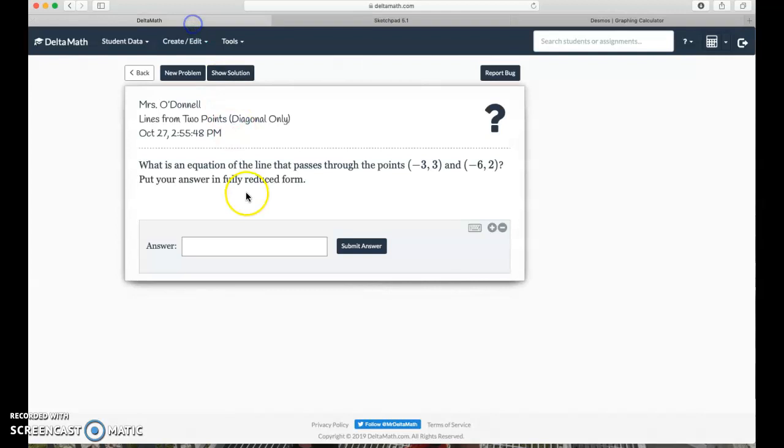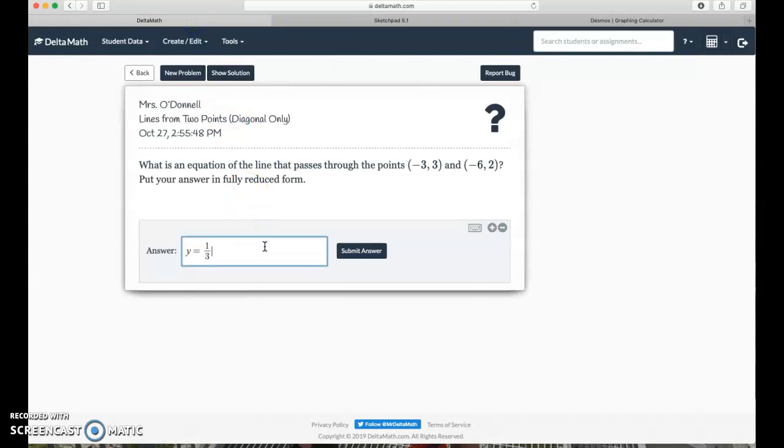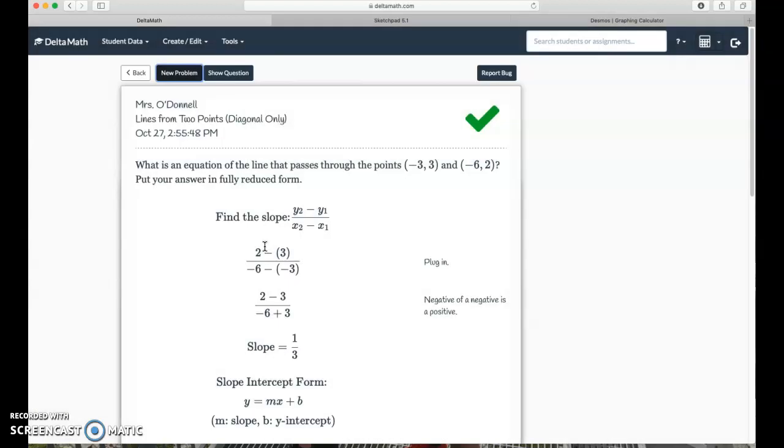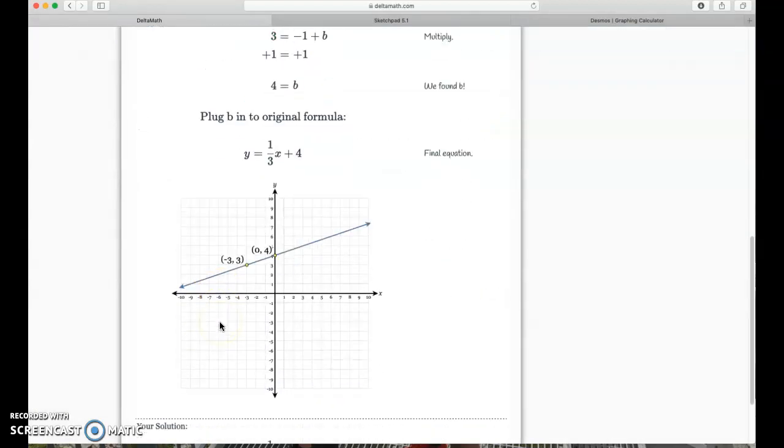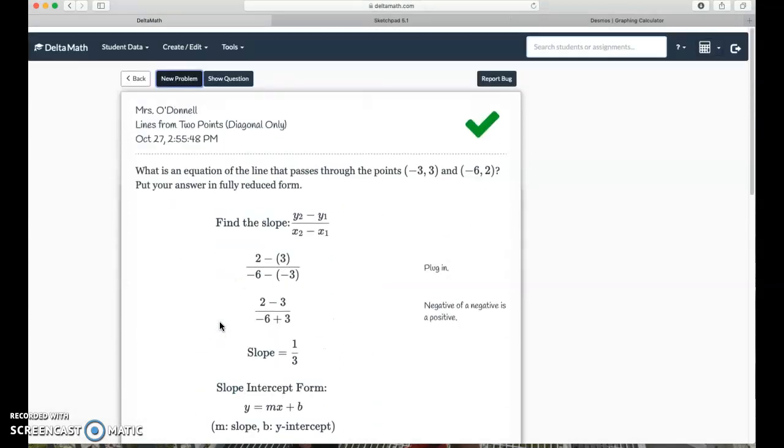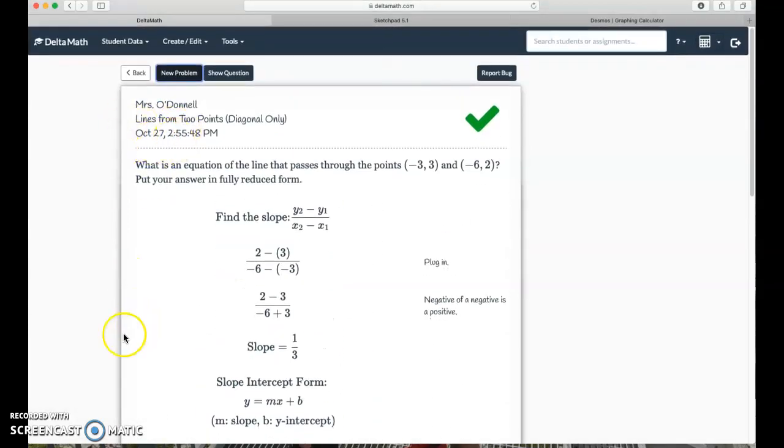And we can come back over to delta math. y equals 1 third x plus 4. See if they like it. And they did. Okay, so a couple different ways that you can find your equation for your line.